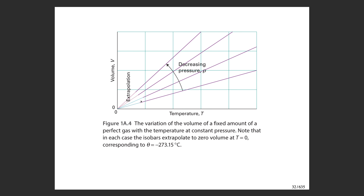Here we're looking at a Charles law type graph, plotting volume as a function of temperature. Charles law tells us that the volume of a gas is directly proportional to temperature, so for all these different pressures we get straight lines — volume increases linearly with temperature.